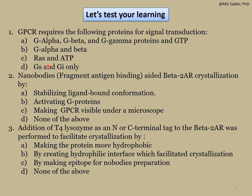Option C — Ras and ATP — is wrong: ATP is not required for GPCR activation; it is required for cyclic AMP production, and Ras is a GTPase not involved in GPCR signal transduction. Option B is partially correct but still requires G gamma and GTP. Therefore option A is correct: the trimeric G proteins G alpha, G beta, and G gamma, plus GTP, are required for G alpha activation.